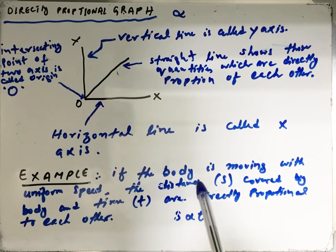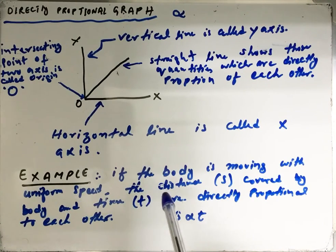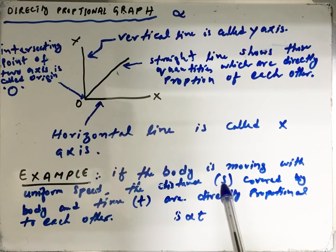If a body is moving with uniform speed, the distance (s) covered by the body and time (t) are directly proportional to each other.